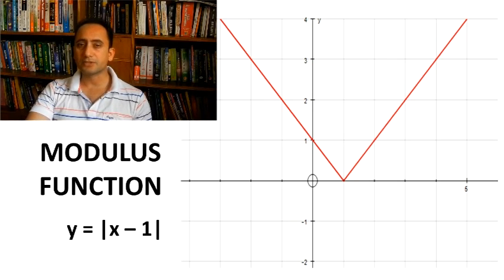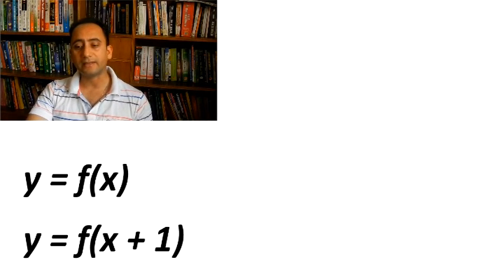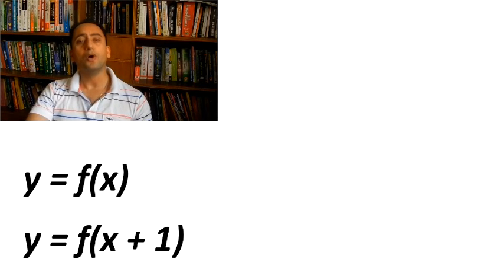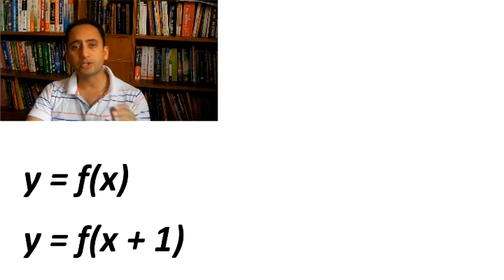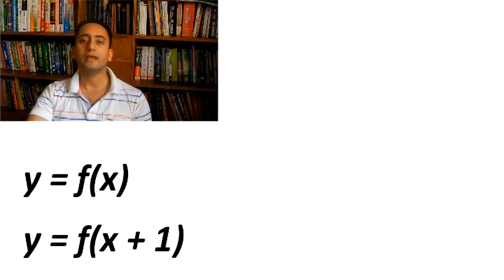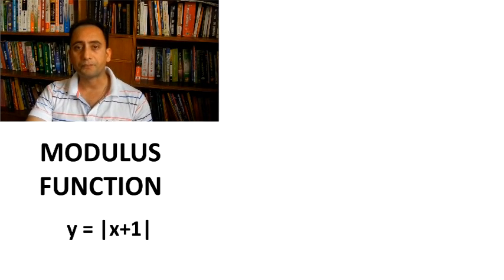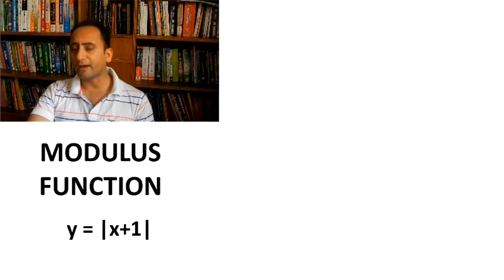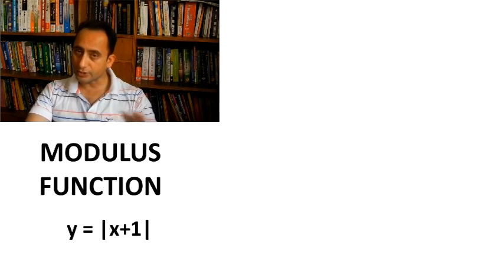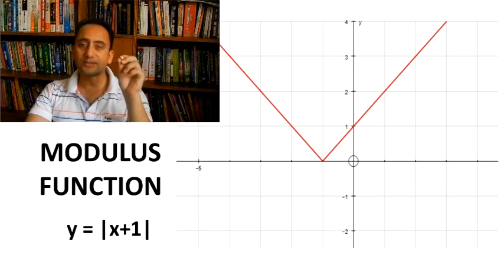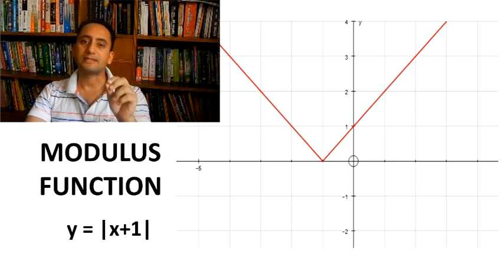And if it becomes y = f(x + c), where c is positive, the graph will shift horizontally by c units towards the negative x-axis. For example, if y = |x| becomes y = |x + 1|, the graph will shift 1 unit towards the negative x-axis and the vertex will lie at (-1, 0).